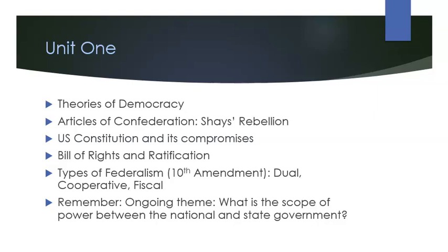Be familiar with some of the major compromises. For example, the Connecticut Compromise merges the New Jersey and Virginia plans together, so we have both small and larger states gaining representation. We have that today with the House based on population and the Senate, which favors smaller states with each state getting two senators. Also be familiar with voting requirements being left up to the states, and the Three-Fifths Compromise. Without it, it would be very hard to get the South on board for ratification. Devising the Constitution was the easy part — getting it ratified was the hard part.